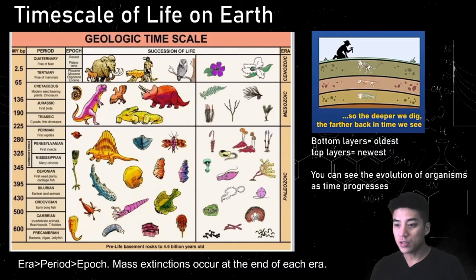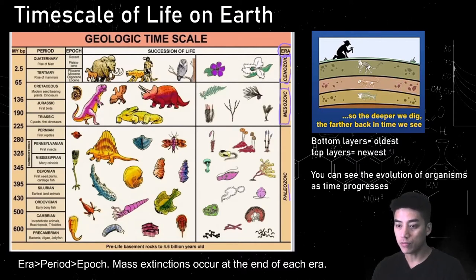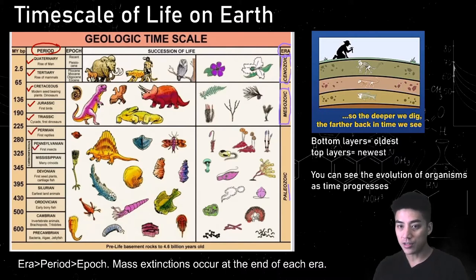Here is the geologic timescale, which shows what kinds of organisms lived in which time periods. There are three eras: the Cenozoic, Mesozoic, and Paleozoic. Remember the Greek root 'paleo' means old, so that's the oldest one. The bottom-most layer is the oldest; the top layer is the newest. Each era can be further divided into periods, and they don't all have the same number. This timescale goes all the way back 600 million years, when advanced organisms first appeared on Earth.